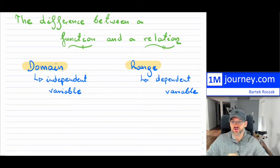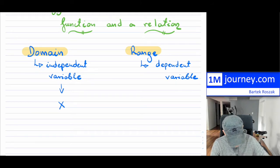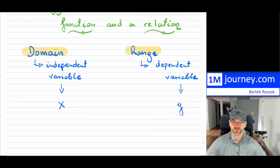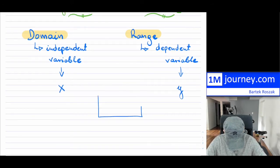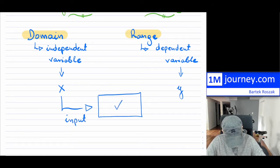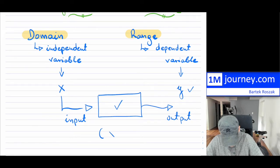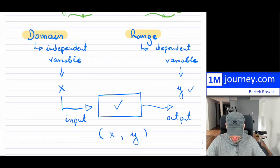Now, domain and range: the independent variable is typically designated with the letter x, and the dependent variable is designated with the letter y. In terms of a relation, it is a relationship between x and y. I like to think of x as the input — something happens to this input — and then I have an output, which is your y. These are always given as an ordered pair.